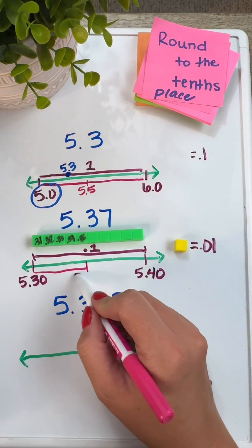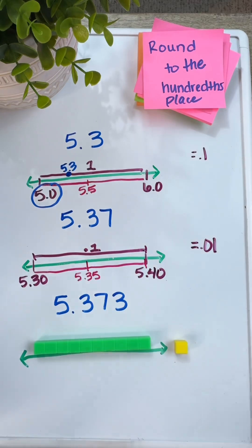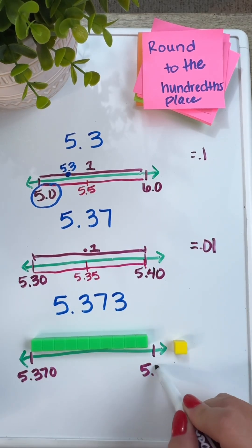So when we're rounding to the tenths, that rod can represent one tenth. And if we're rounding to the hundredths, the rod will represent one one hundredth.